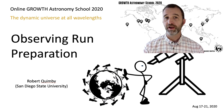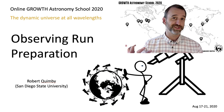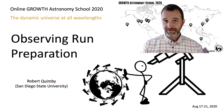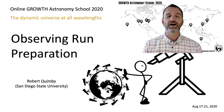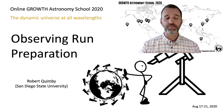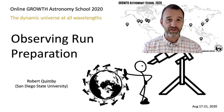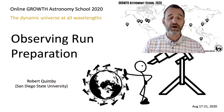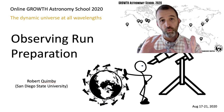Hi, I'm Robert Quimby from San Diego State University and I'm going to talk with you about preparing for an observing run. Before you can prepare, the very first thing you have to do is get time on a telescope. I'm not going to cover that here. I'll assume you've already gone through that process, prepared an application, been awarded time, and now you're trying to figure out the best way to use the resources you've been allocated.